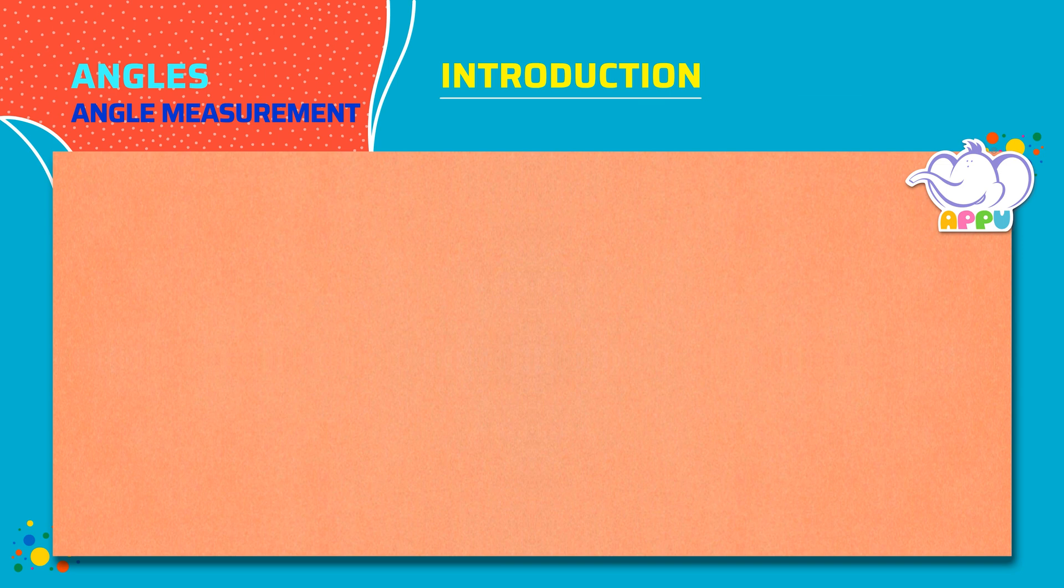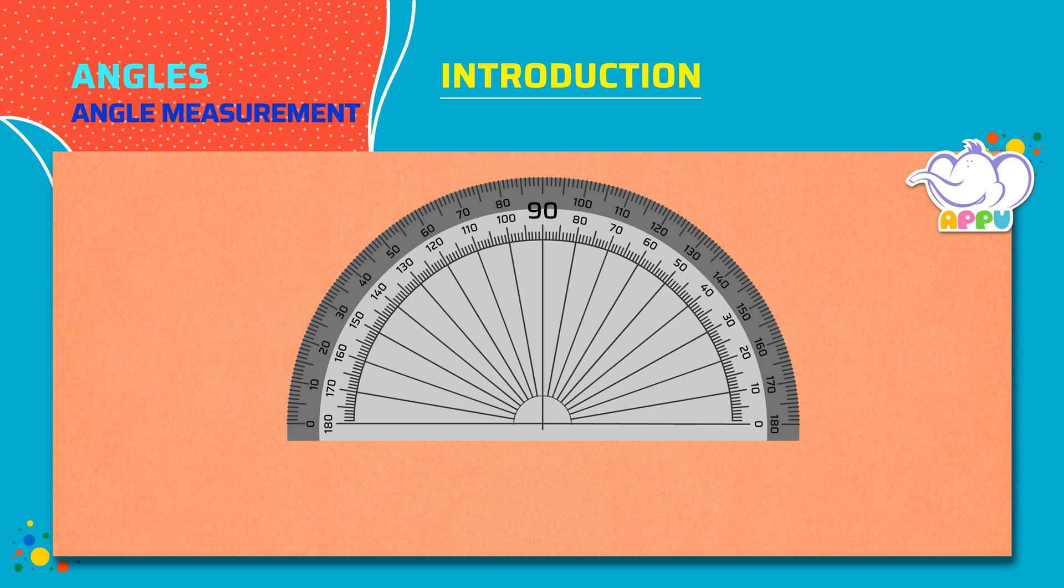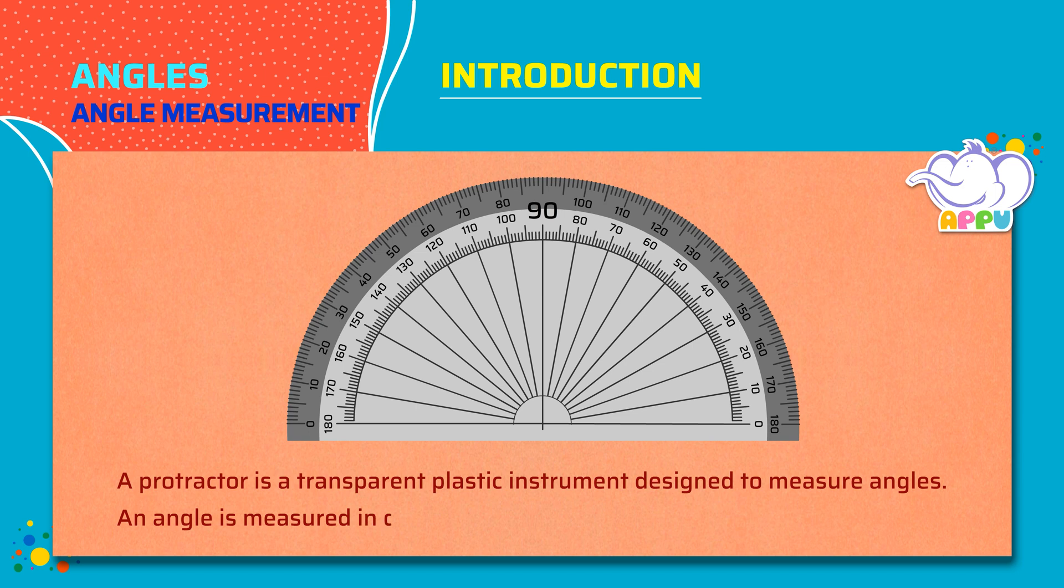Measuring Angles. To measure an angle, we use a protractor. A protractor is a transparent plastic instrument designed to measure angles, and an angle is measured in degrees.